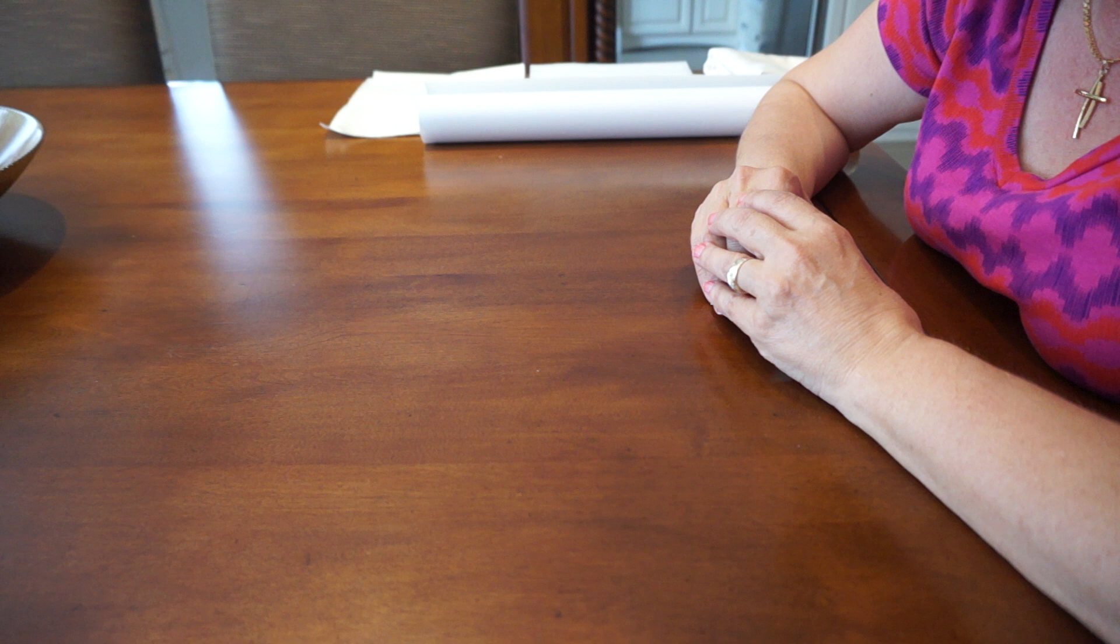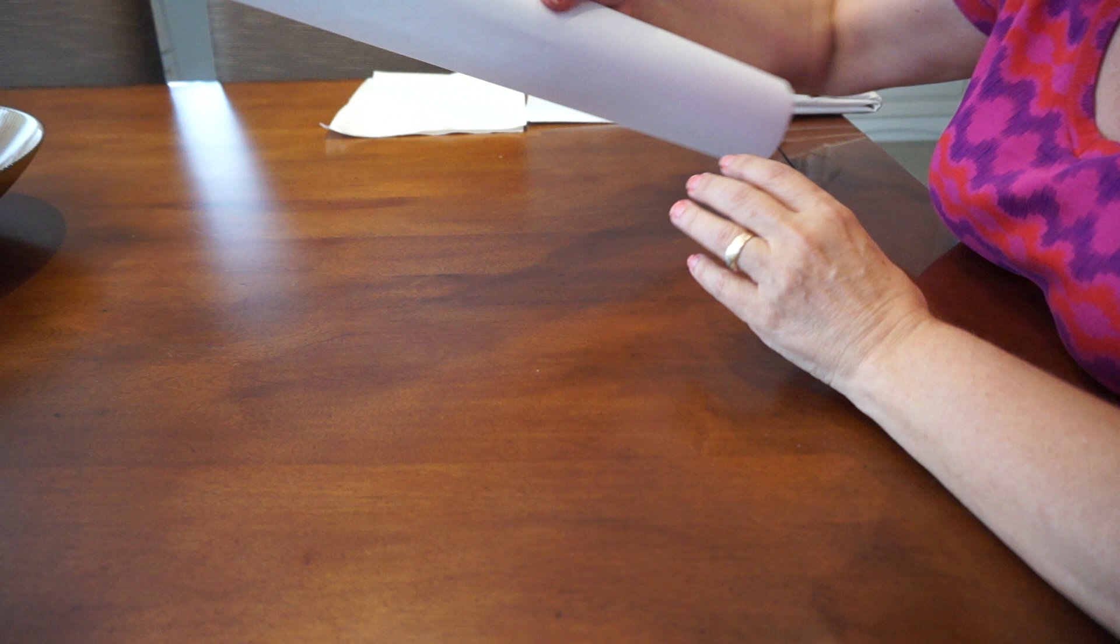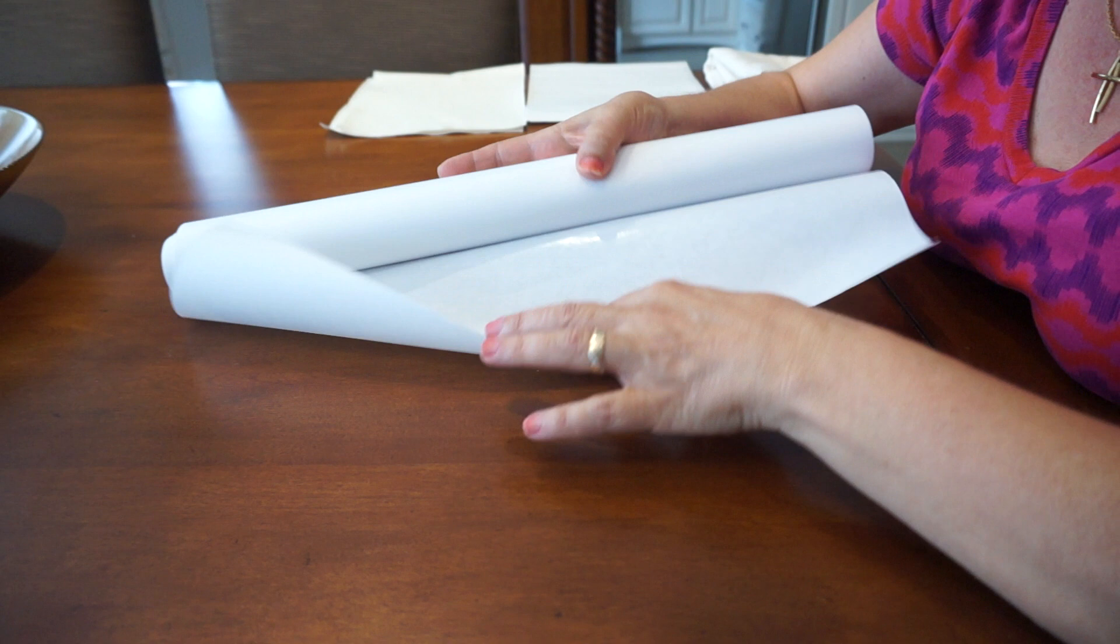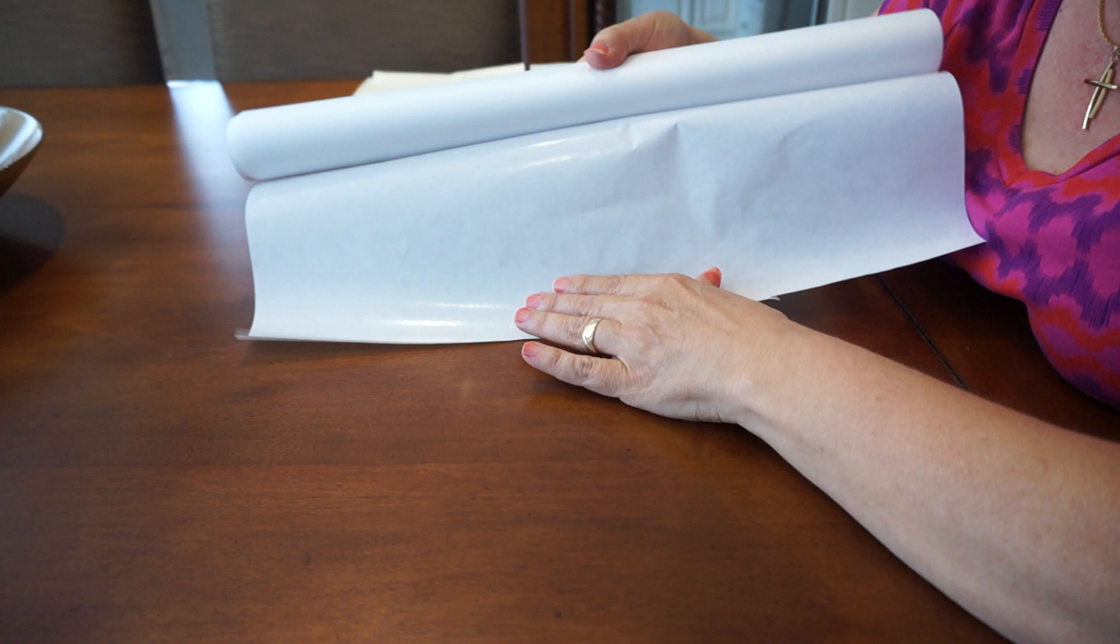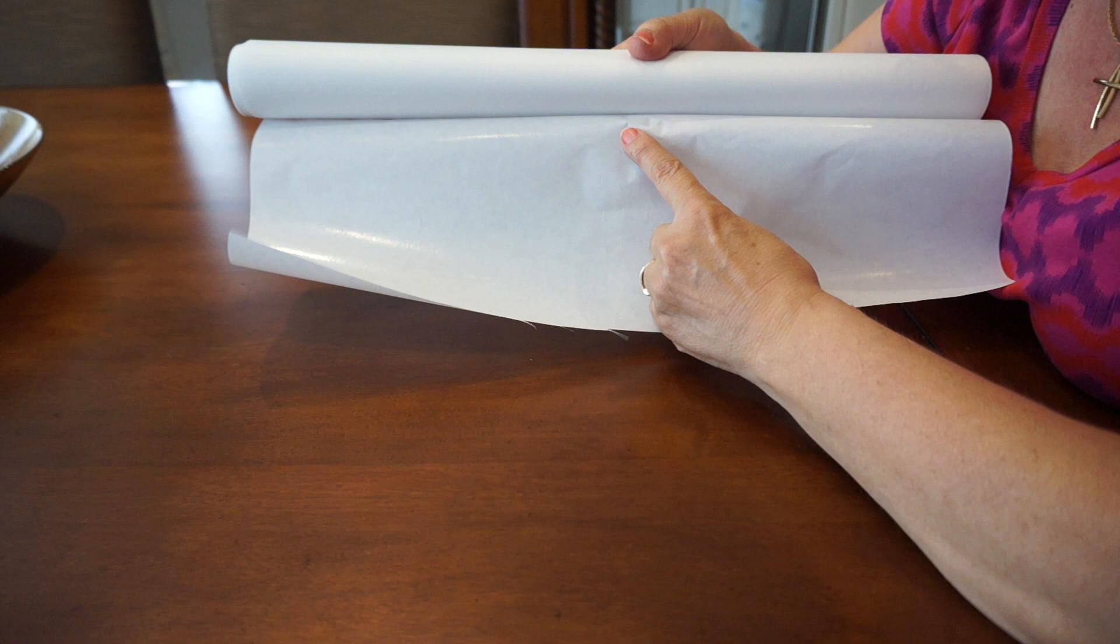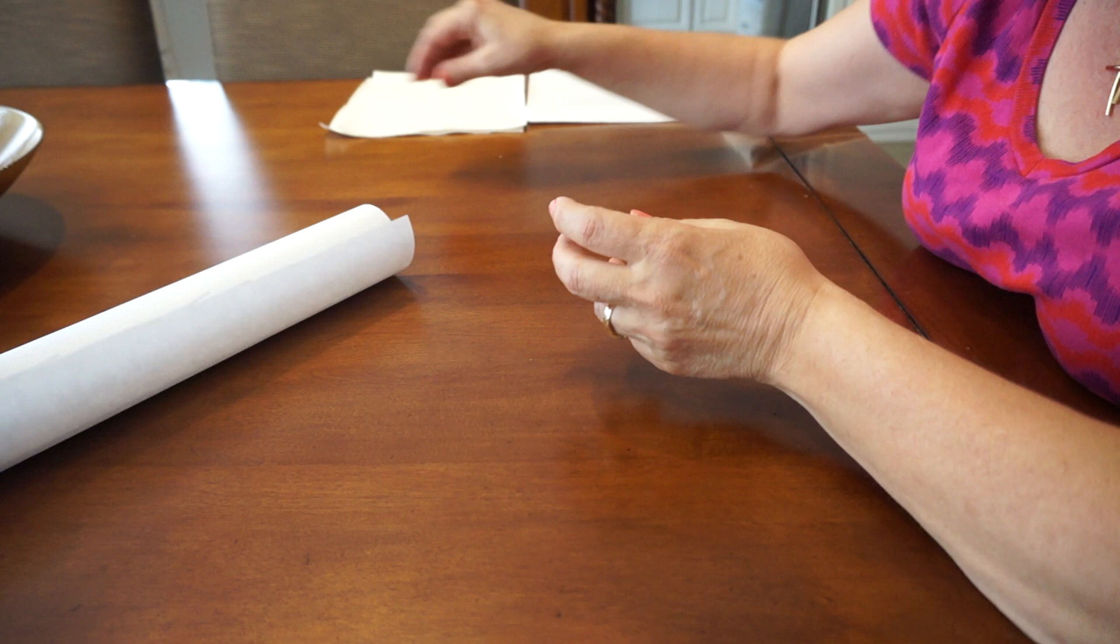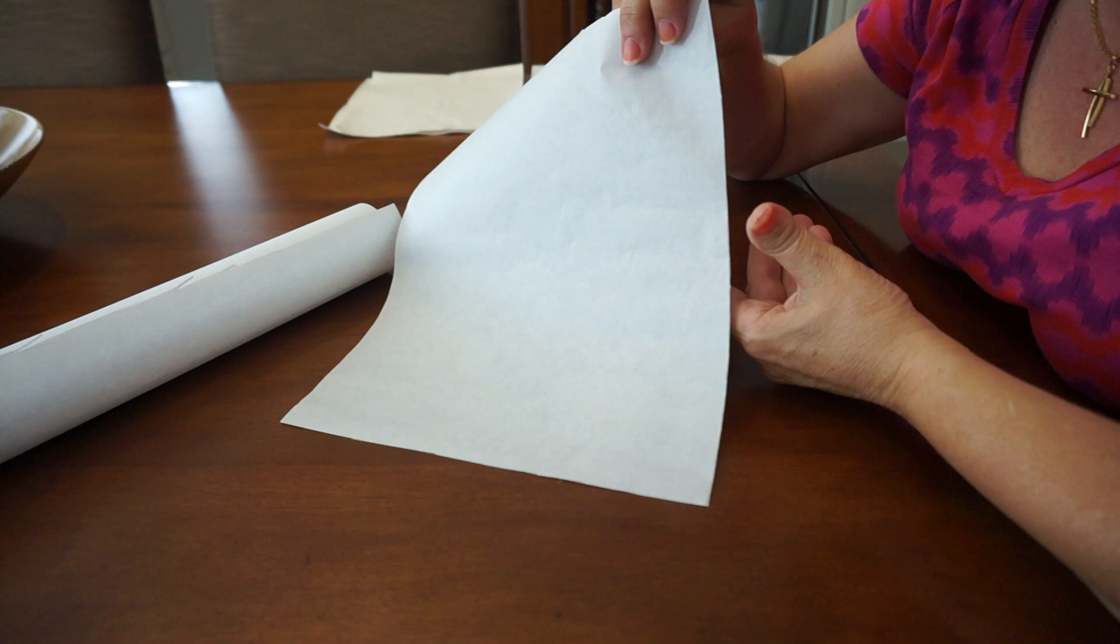So what I do is I use freezer paper, and these come in boxes. You can buy them like so in rolls, and you'll see that one side is flat and the other side has a shiny side. So this is the side that you're going to adhere to your fabric. So what I do is I cut up the freezer paper into eight and a half by eleven sheets, which would be exactly like your photocopy paper, as you can see.